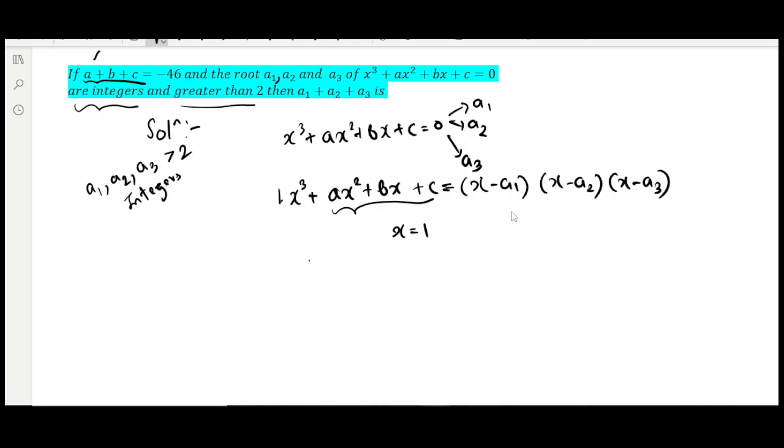Putting x = 1: 1³ + a + b + c = (1 - a1)(1 - a2)(1 - a3). This equals -46 + 1, which is -45.